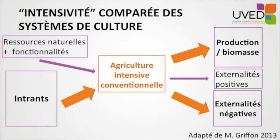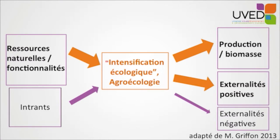The new paradigm that should be adopted to intensify agriculture consists in using ecosystemic services and biodiversity in order to intensify production. Inputs will still be used, but to a lesser extent, whereas ecosystemic services will be amplified and used more on the plot and around the plot — for the benefit of biomass production, but also for positive externalities and ecosystemic services — while trying to decrease and mitigate negative externalities.